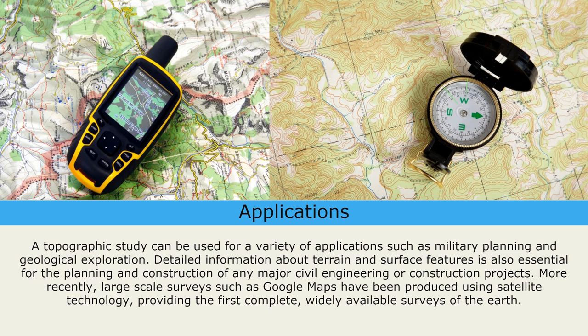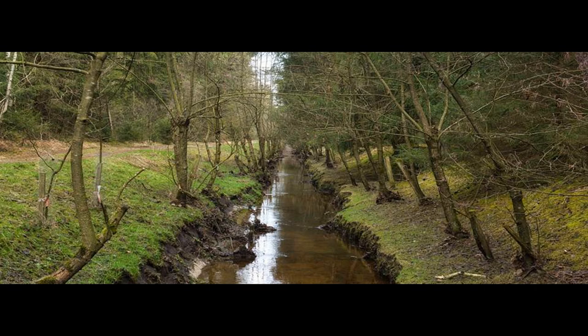What is drainage? Drainage is the natural or artificial removal of surface water and subsurface water from an area with excess water. The internal drainage of most agricultural soil is good enough to prevent severe waterlogging, but many soils need artificial drainage to improve production or to manage water supplies.